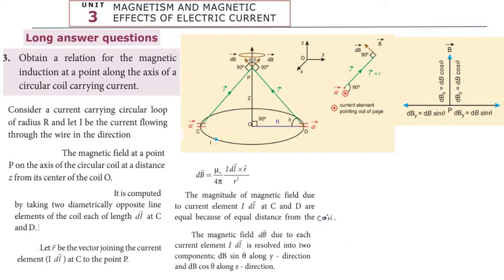Hi students, greetings from Success Education Academy. This is physics unit 3, magnetism and magnetic effects of electric current. The lesson is a long answer question — the third question: obtain a relation for the magnetic induction at a point along the axis of a circular coil carrying current.